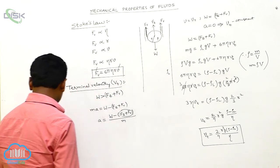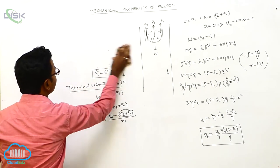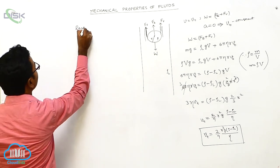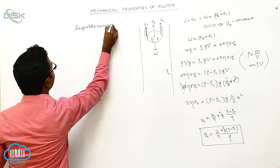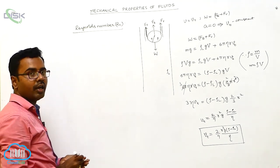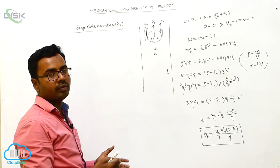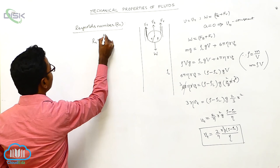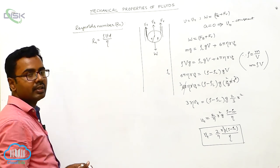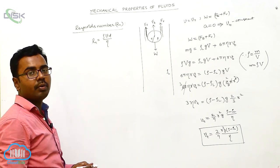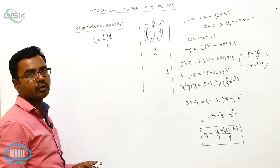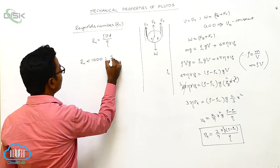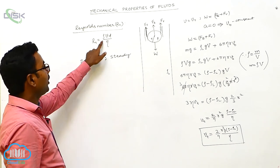Then we discuss Reynolds number. Using the value of Reynolds number, we can identify the type of fluid flow — whether it is turbulent flow, steady flow, or switching between them. The Reynolds number is given by Rn = rho·V·d / eta, where rho is the density of the fluid, V is the velocity of the fluid, d is the diameter of the tube of flow, and eta is the coefficient of viscosity of the fluid.